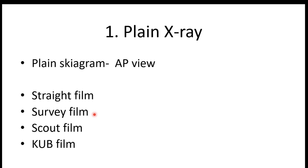The second type is a survey film. Sometimes we perform special procedures to see hollow organs — barium studies, pyelography, and hysterosalpingography. Just before injecting or using the dye, we take a plain X-ray of the abdomen, which is known as a survey film. The third is a scout film.